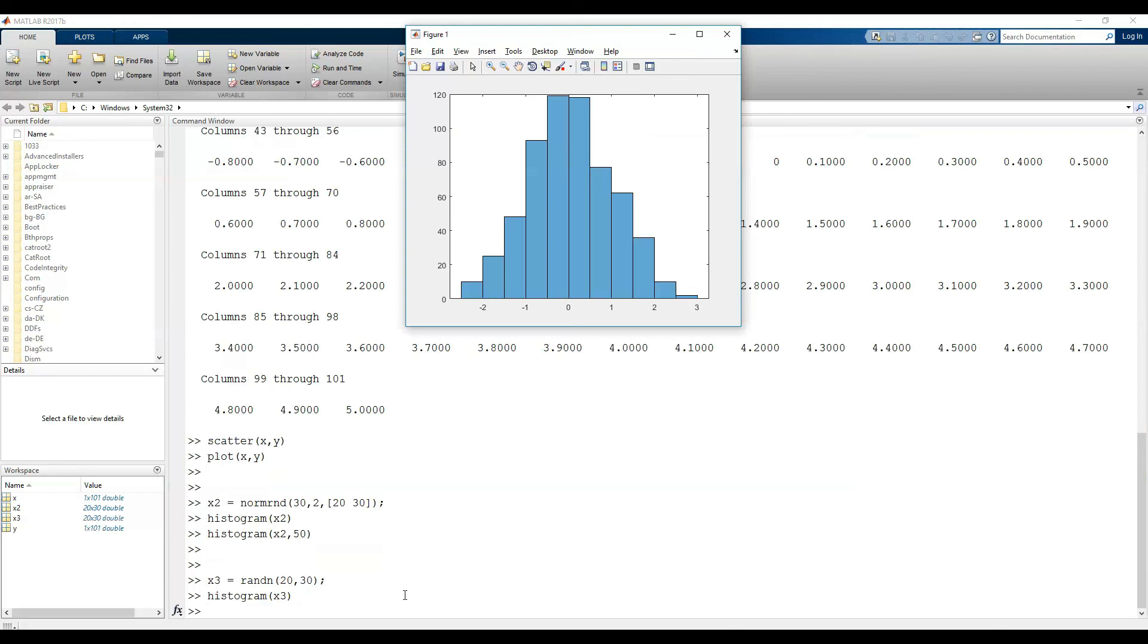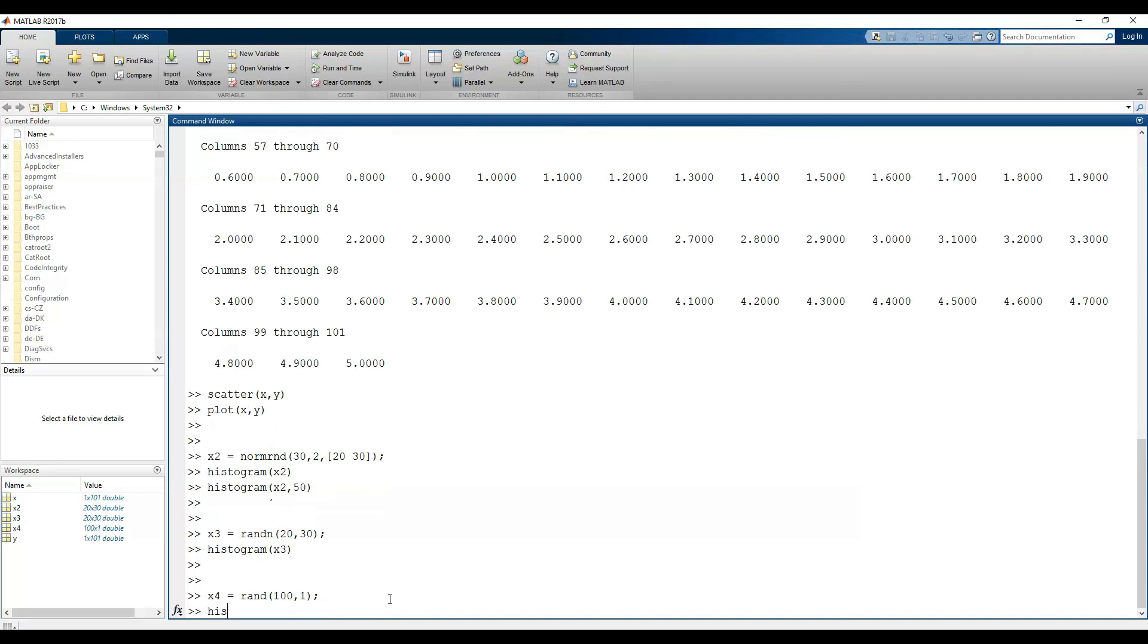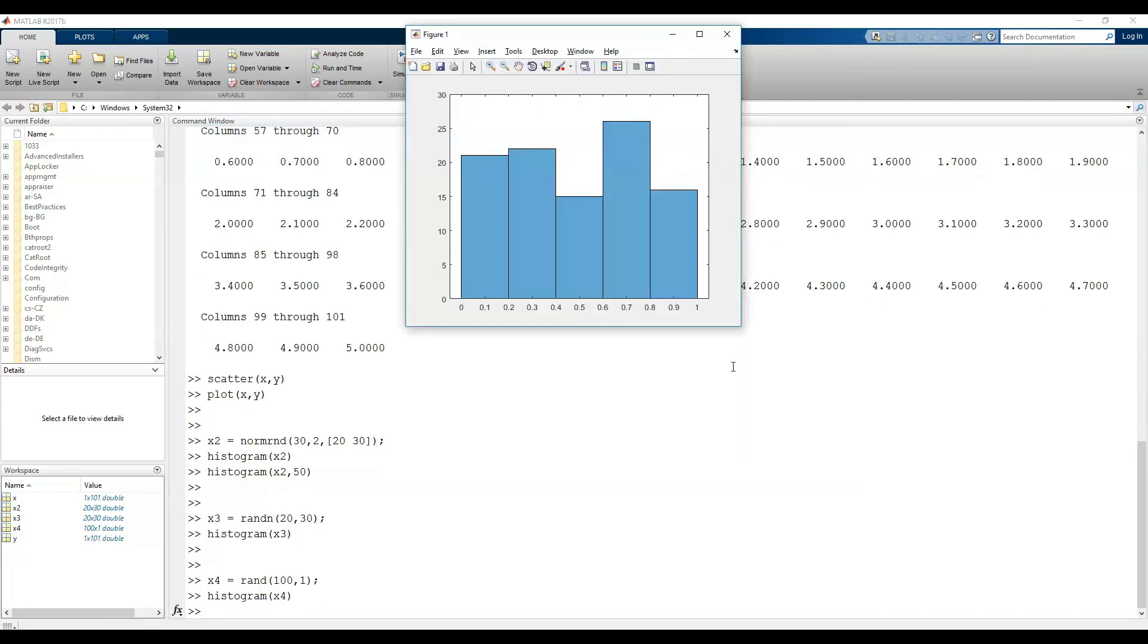Now, suppose we are given some data. The question is how we can estimate a normal distribution based on the given data. Remember that data may not follow normal distribution, but we want to estimate a specific normal distribution based on those data.